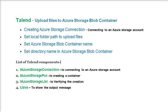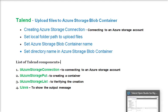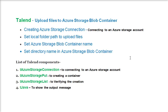So here we are going to Talend Open Studio. Before we start, here is the summary: first we are going to create an Azure Storage connection, then set the local folder path to upload files, set the Azure Storage Blob container, and set the directory name in the Azure Storage Blob container.